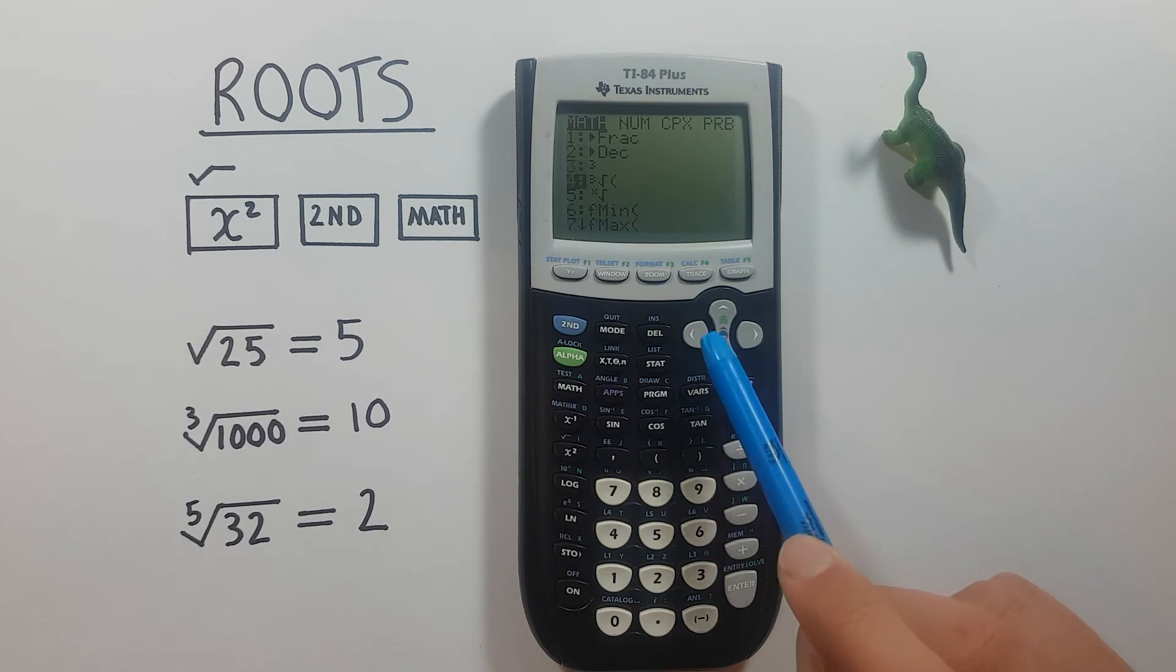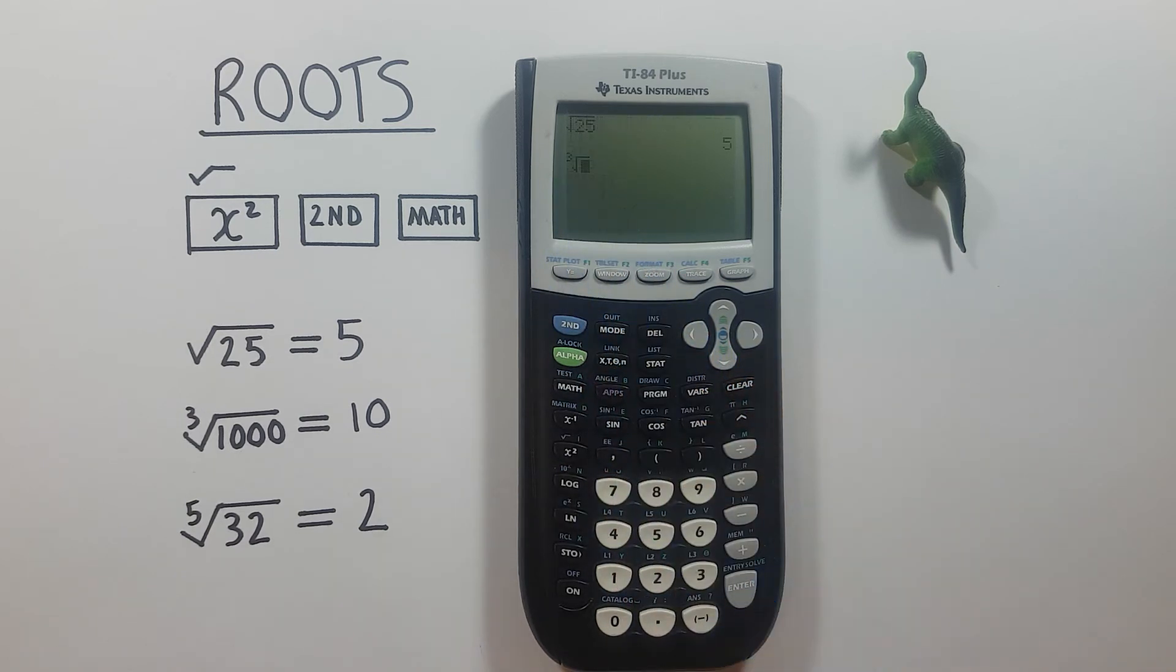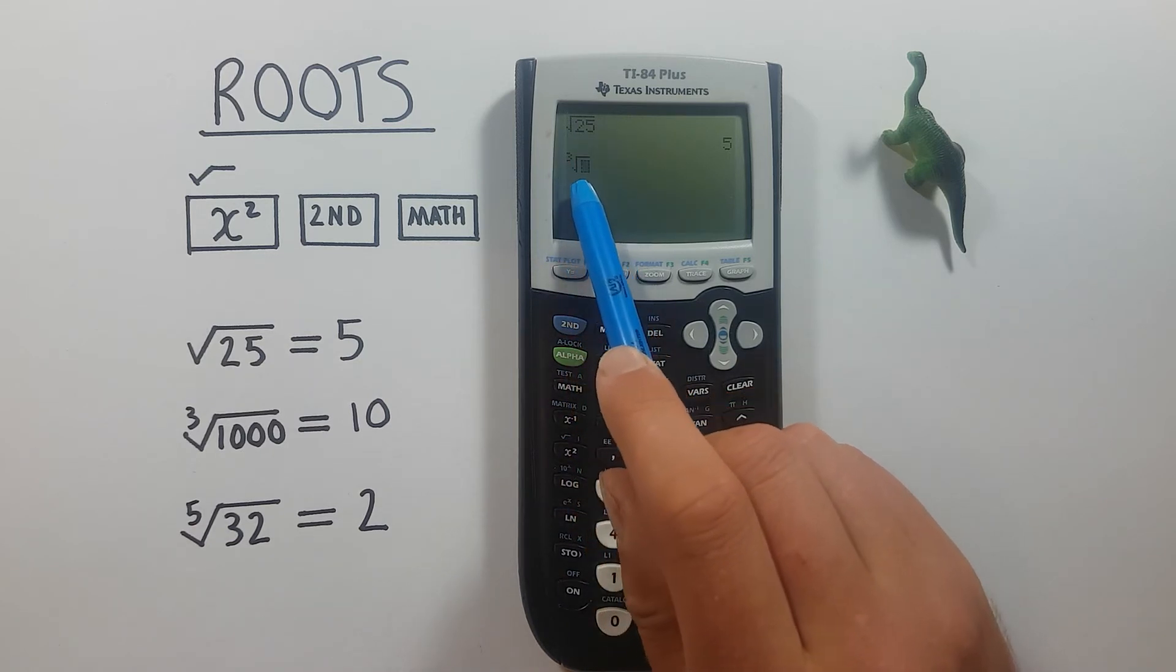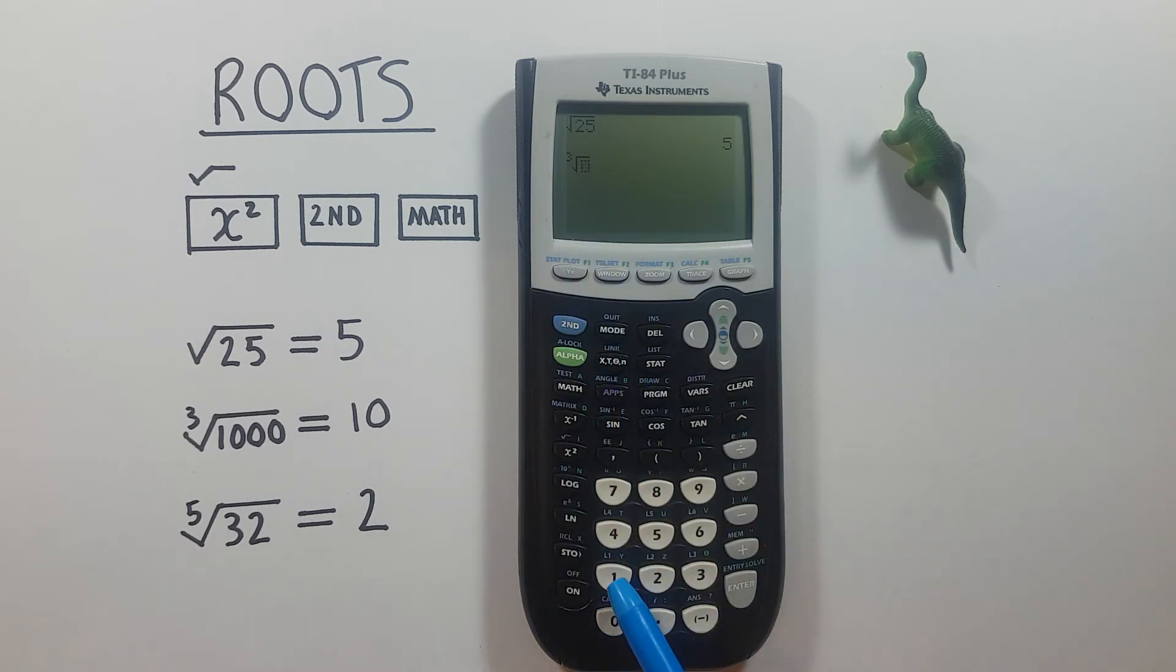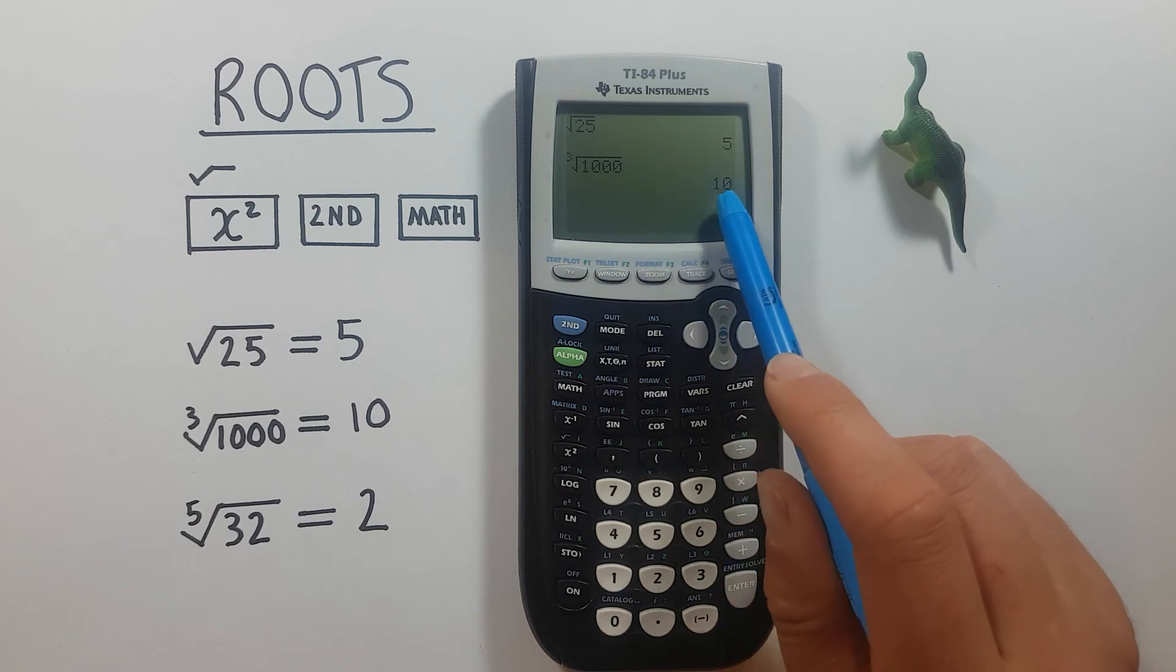If we scroll down or press 4 to number 4 here, select it, we get this, a third root with an open box underneath. So again we just enter our number, which in this case was 1000, press enter and we see we get the third root or cube root of 1000 equals 10.